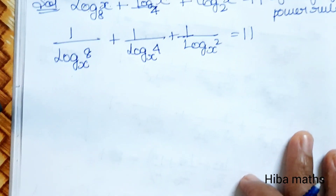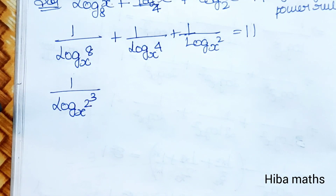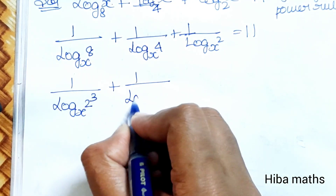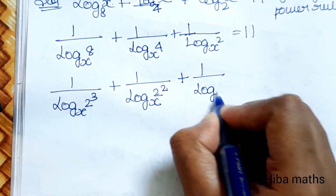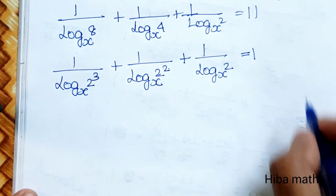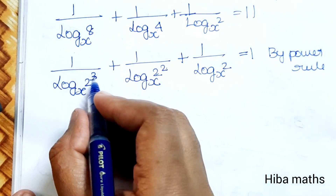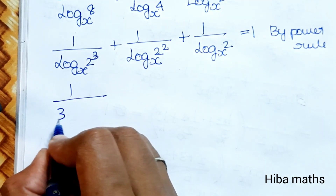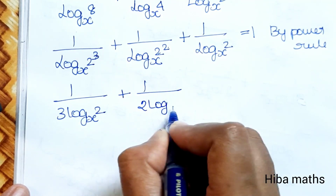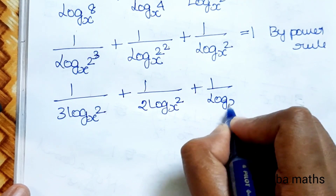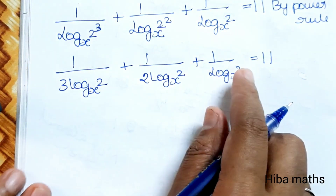Now, 8 is equal to 2 power 3, so 1 by log base x of 2 power 3 — that gives us 3 times (1 by log base x of 2). Similarly, 4 is 2 power 2, giving 2 times (1 by log base x of 2). And the last term is 1 by log base x of 2. So we have: 3 plus 2 plus 1, all multiplied by (1 by log base x of 2), equals 11.